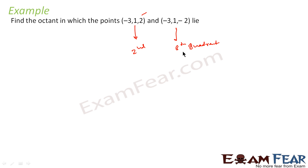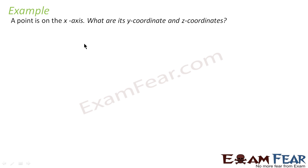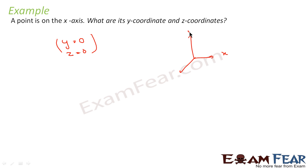Let's check another example. A point is on the x-axis — what are the coordinates of y and z? If the point is on the x-axis, the y coordinate will be zero and the z coordinate will be zero. Any point on the x-axis can be denoted by (x, 0, 0). Since this is on the x-axis, the z component is zero, and the y component is also zero.